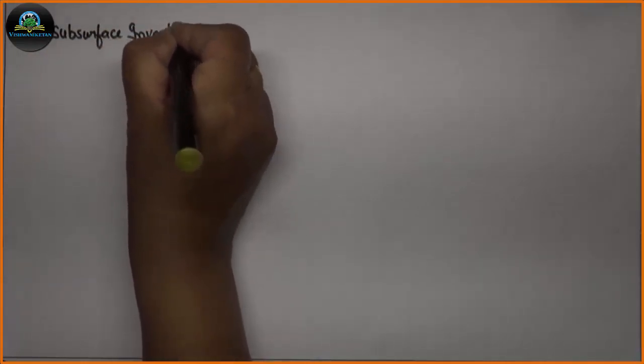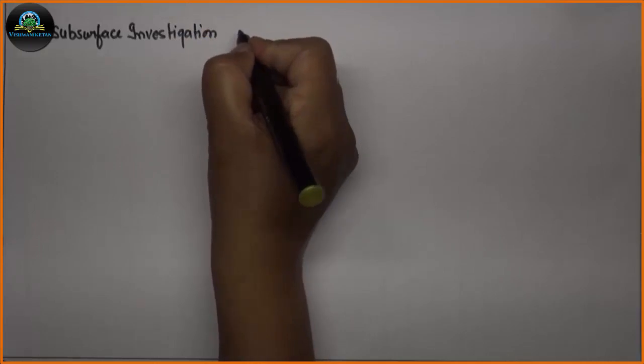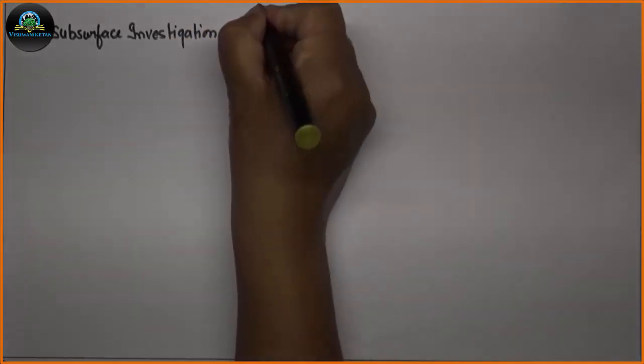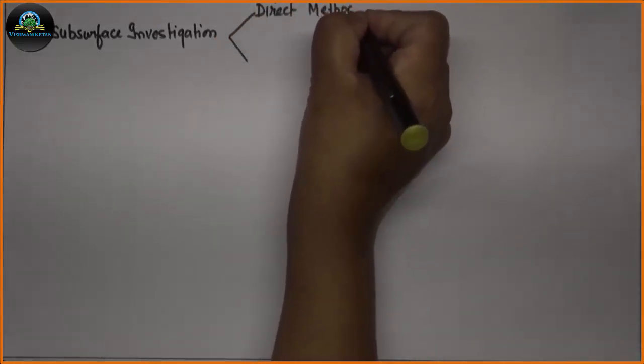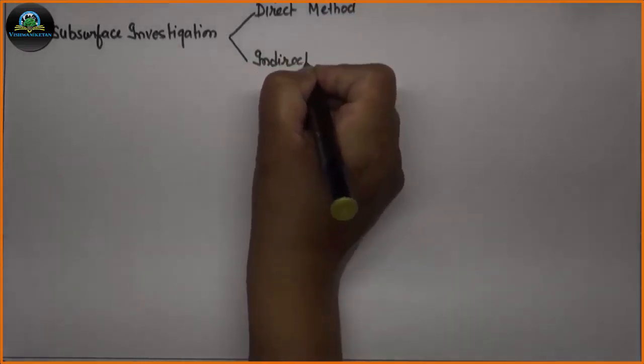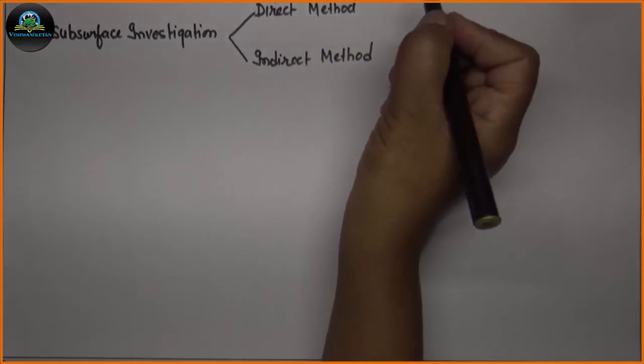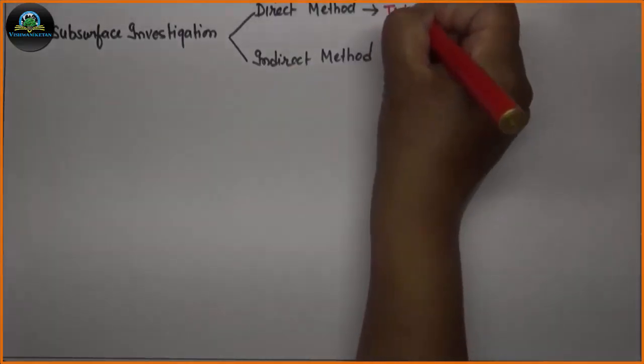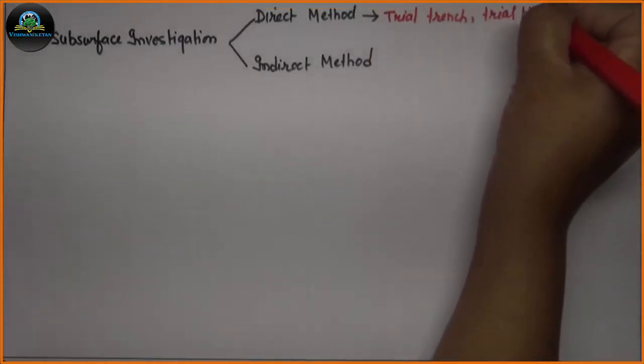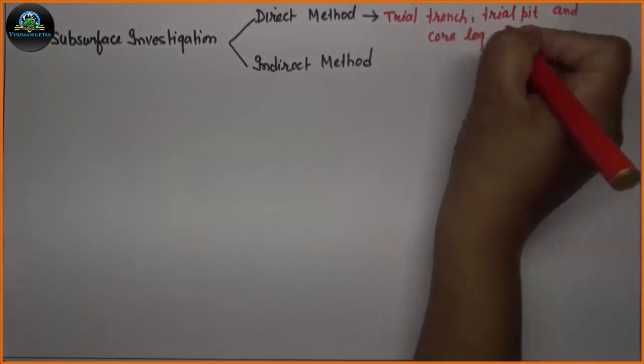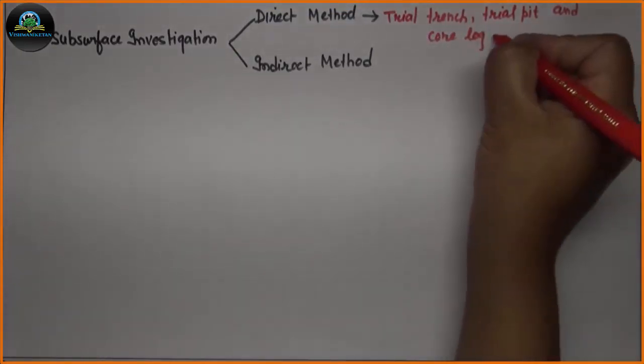After surface investigation, subsurface investigation is also important because it gives details about what lies under the surface that is not exposed to us. Subsurface investigation has two methods: first is the direct method and second is the indirect method. The direct method includes trenches, trial pits, and core logs, which are sometimes also known as borehole data.